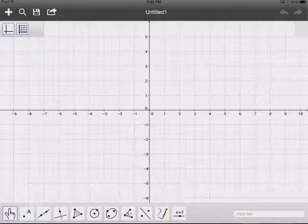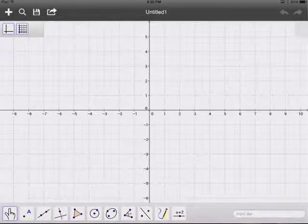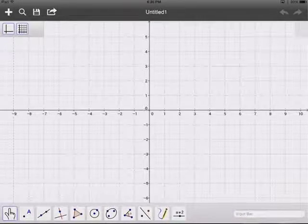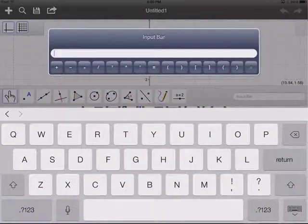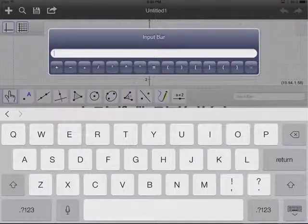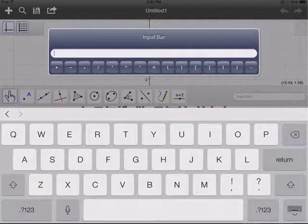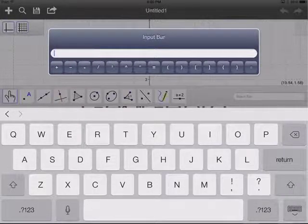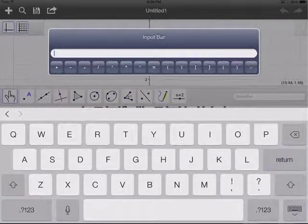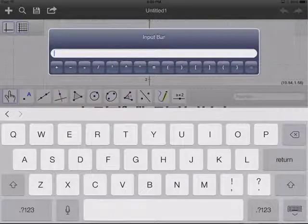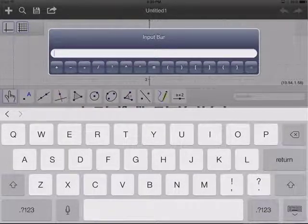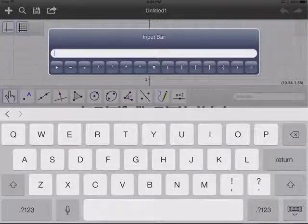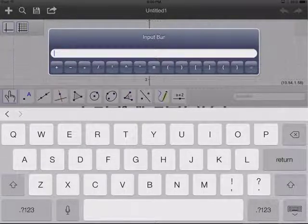To graph a line, or any equation for that matter, any function, we simply go down to the input bar and tap. When you do that, the input bar window pops up along with a keyboard, and we are able to type in our equation. Notice in that little blue input bar box there are extra keys that you can use. For instance, the equal sign is one you'll want to have handy, as well as the plus sign. Squared, degrees, pi, things like that.